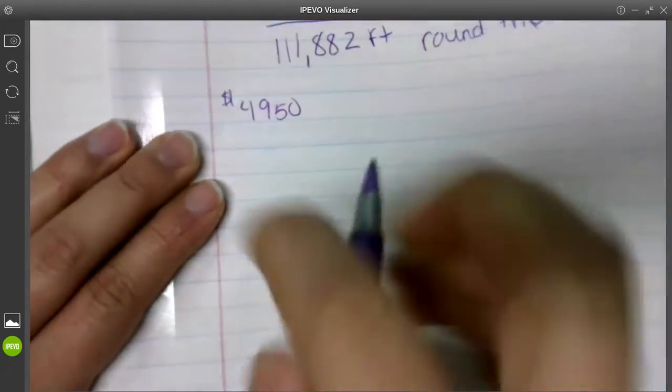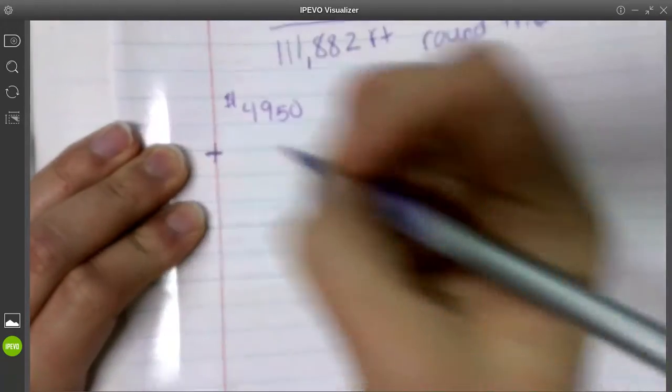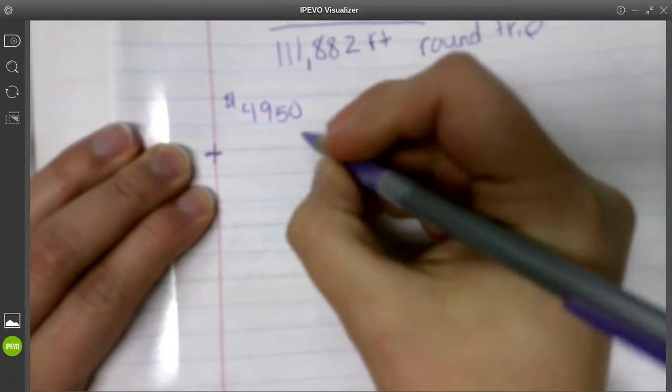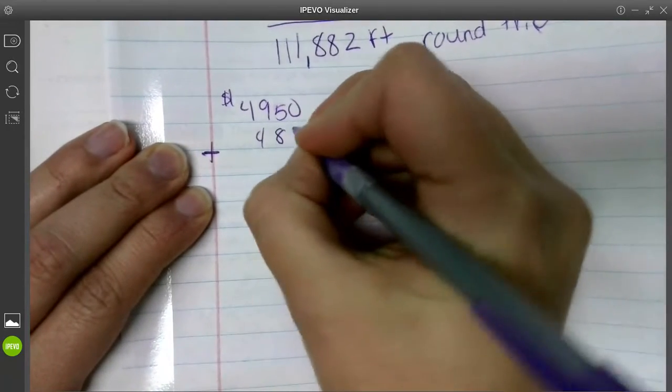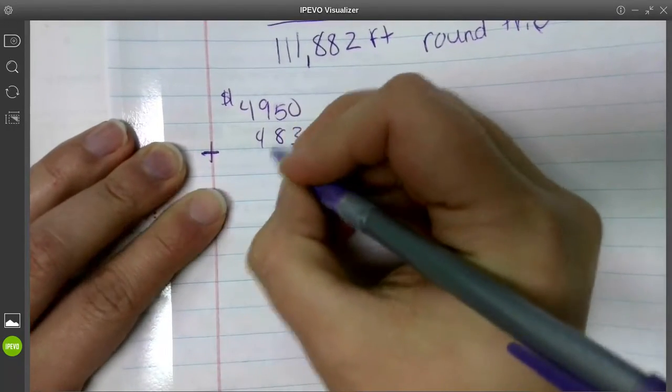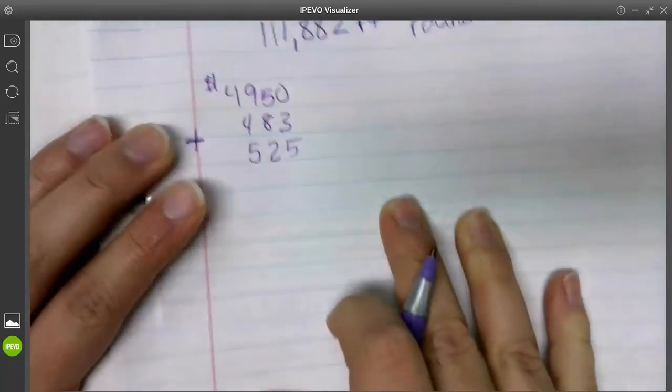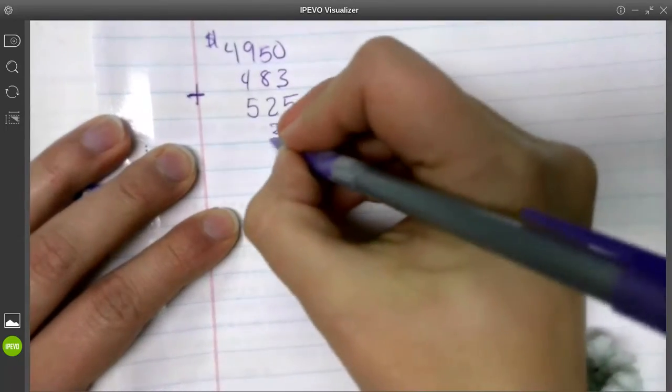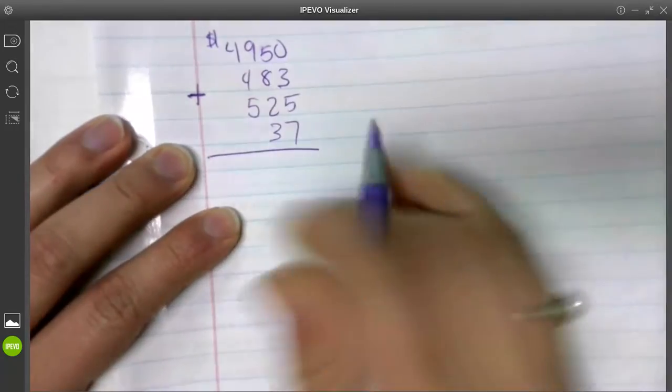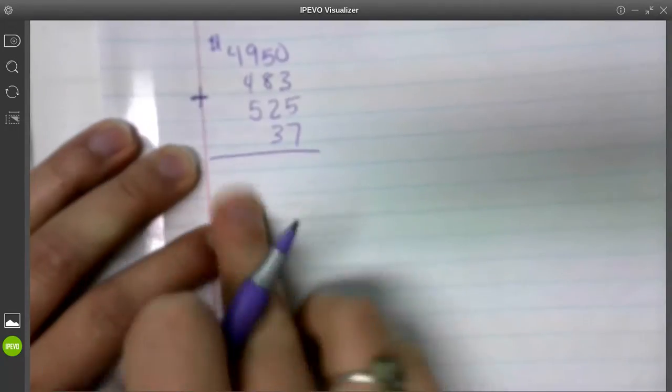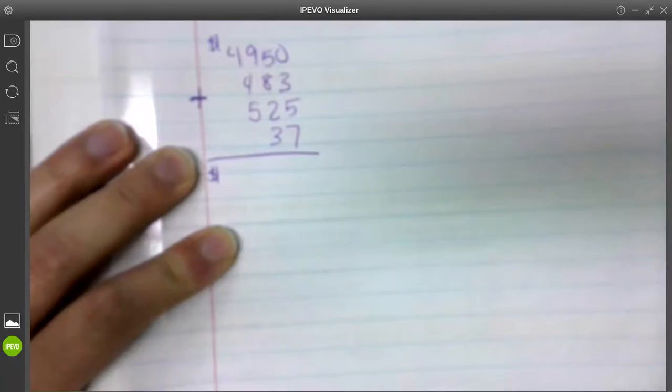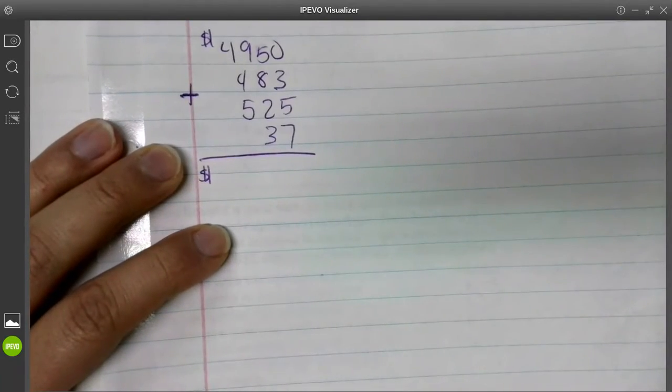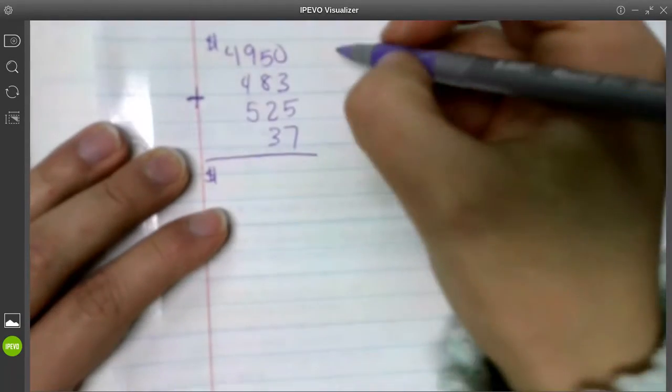I'm going to put a plus sign over here, and then next it was $483. We have to make sure to line up the digits. And then $525 and $37. So it's okay to just put one dollar sign as long as you remember to carry it to the bottom. So if you want to do that now, you can do that now.